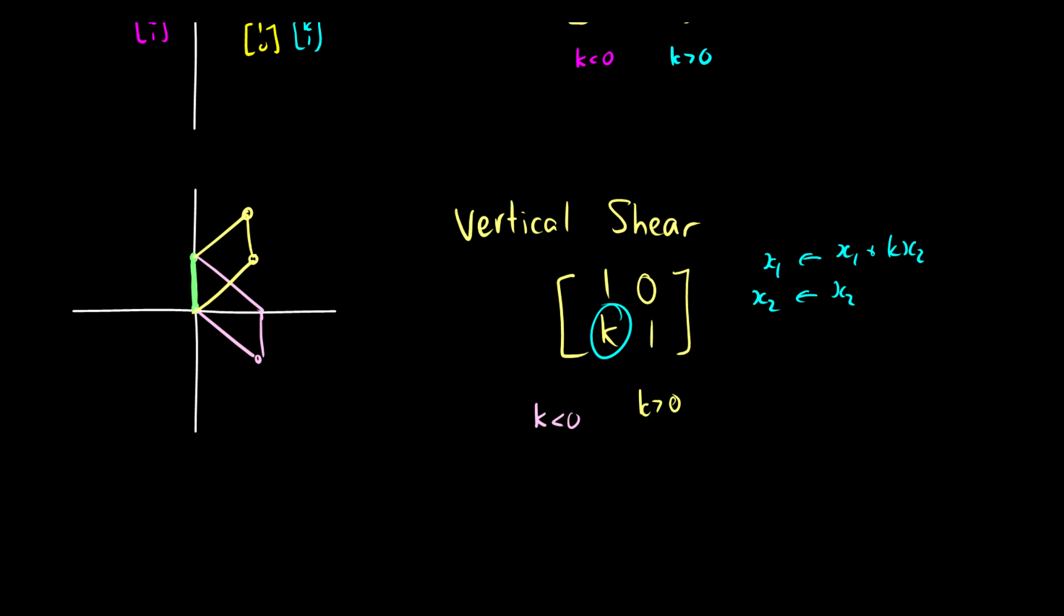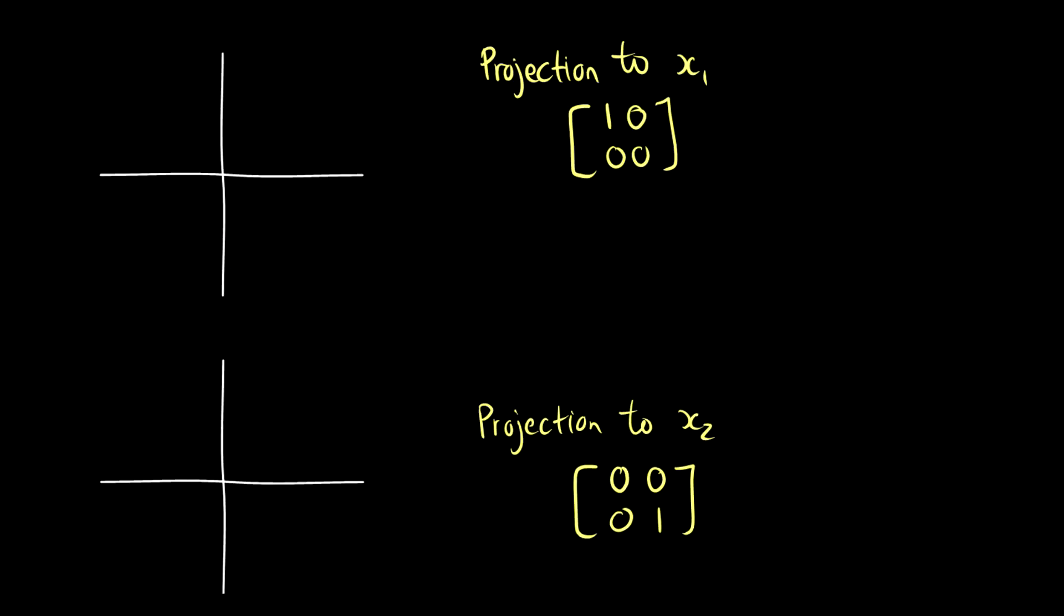Projections are easy, really easy. Basically what you say is, you're taking your image and you're cutting out one of the axes. So in this case, x1, we're removing all x2s. We have 0 x2s there, so we just get x1. If we project to the x2 plane, then we're saying, okay, forget the x1 columns. We just want it to be on x2.